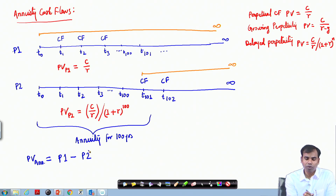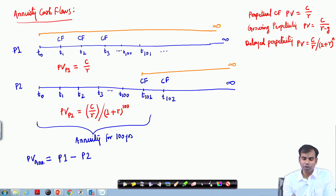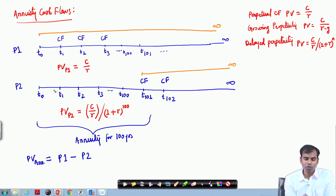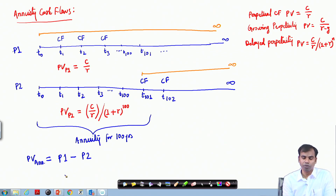The present value of P1 implies you are receiving cash flows for the whole perpetual period. The present value of P2 implies you are receiving cash flows originating after 100 years — from year 101 onward. So calculating the difference gives you the present value of the first 100 years, which is the annuity formula.